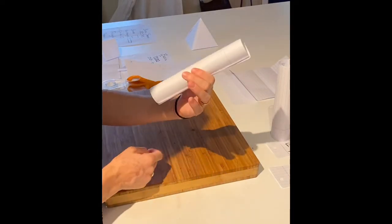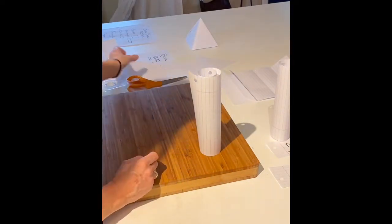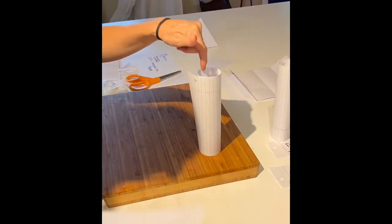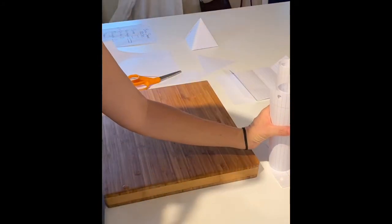This is a cylinder. You can put a little tape on there, but you do not have to. You have now taken a two-dimensional rectangle piece of paper, a 2D flat shape, and you've made it into a three-dimensional cylinder, which is a form.